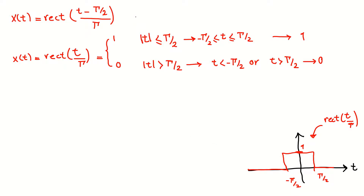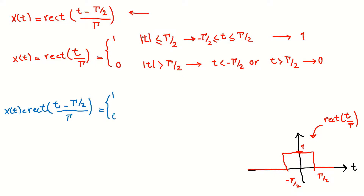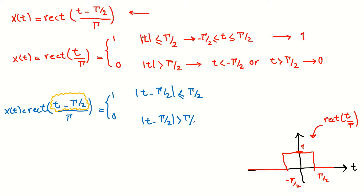What we are looking for is a time-shifted version of this signal. If X(T) equals rect of (T minus tau/2) divided by tau, we can use the same expressions: it is 1 or 0. It is 1 if the absolute value of (T minus tau/2) is smaller than or equal to tau/2, otherwise — meaning T minus tau/2 is larger than tau/2 — the value is 0.